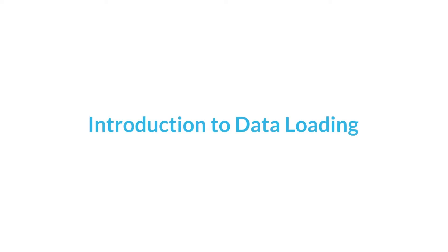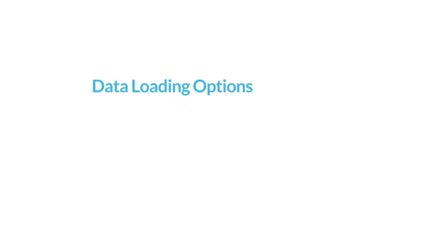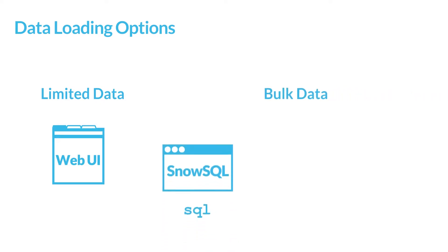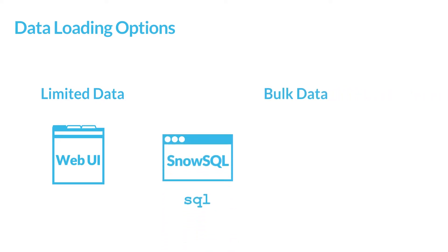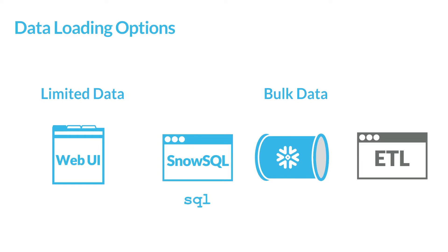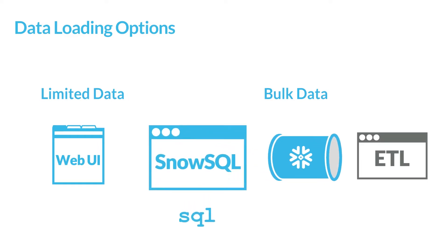This video will familiarize you with the fundamentals of loading data into Snowflake tables. Snowflake supports four options for loading data: you can use the web interface to load limited amounts of data; you can bulk load large amounts of data using SQL commands and SnowSQL, the Snowflake command line interface; you can automate bulk loading using Snowpipe; and you can use third-party tools to bulk load data from external sources. This video focuses on SQL, but we will touch on the other three methods at the end.